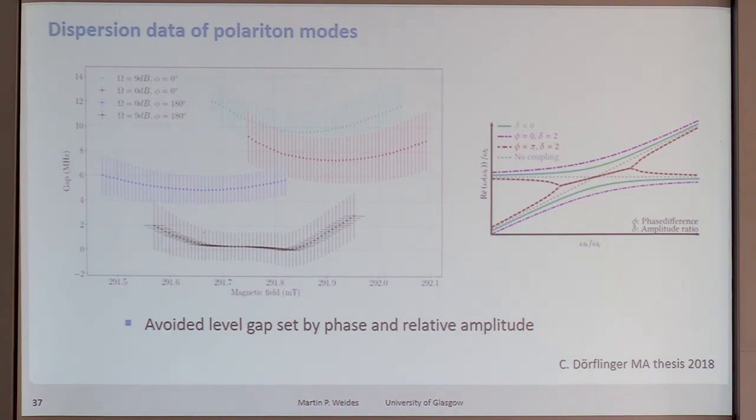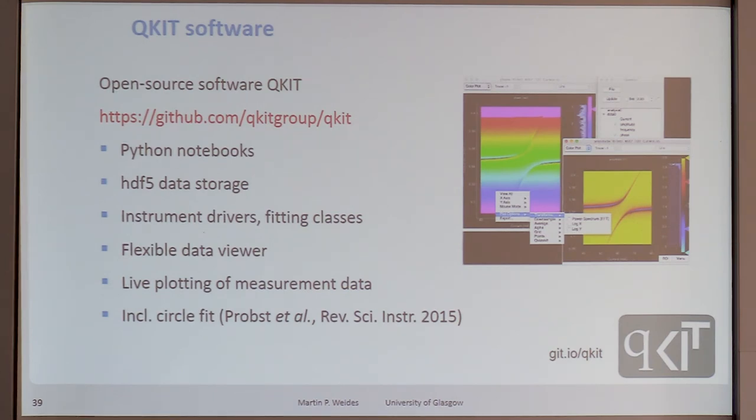I would like to use this talk to also shamelessly advertise our software. We spend lots of time on developing our own open source software at KIT, mostly actually for qubit measurements, but it can also be used for resonator or spectroscopic measurements. Yeah, that's a link you can find on GitHub. It's very flexible. It has really nice viewing capabilities, in particular, live data plotting. And it also includes a circle fit, which we published about three years ago. This is, we didn't invent it, but we proposed a scheme how to implement this efficiently. And using the circle fit, you can use the real and imaginary part to do a simultaneous fit in a robust manner. And then determine the scattering parameters out of that.